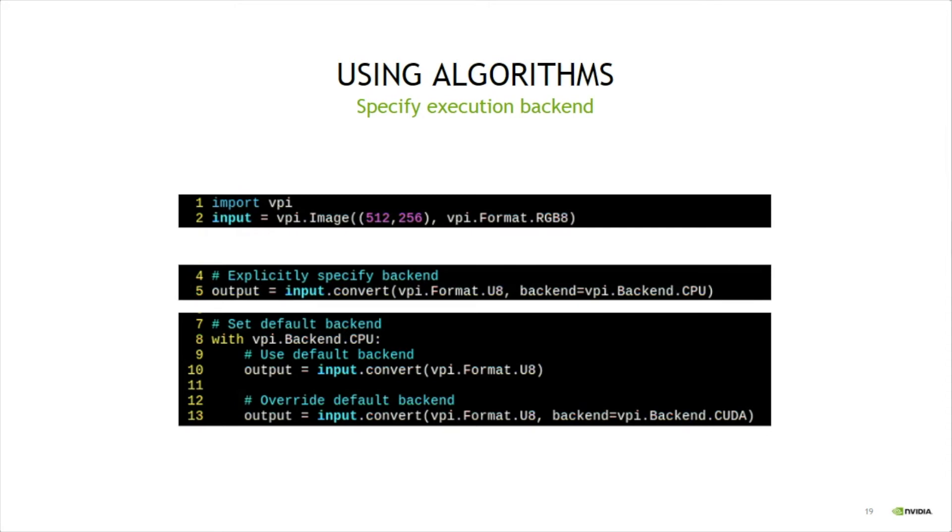With the input memories created, it's time to call the algorithms on them. Most algorithms are methods of the input memory object. On line 5, for instance, the convert algorithm will read the input contents, convert the pixels format from RGBA to U8, which is grayscale, and write the results to the output object returned.